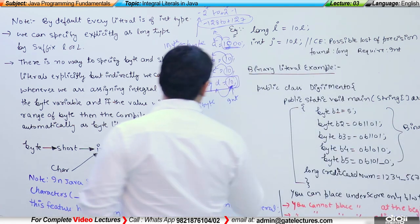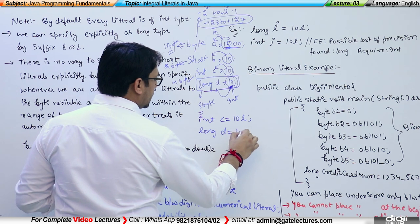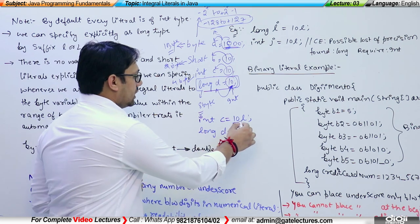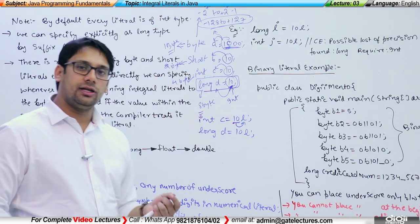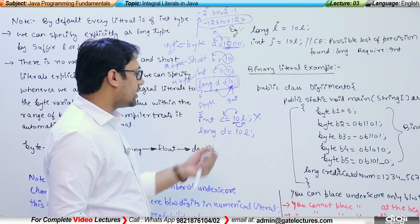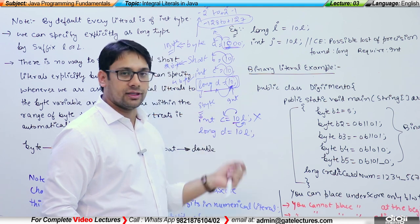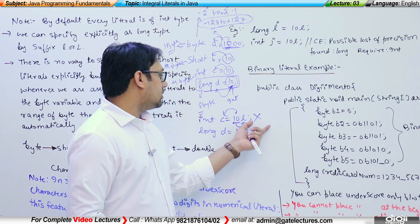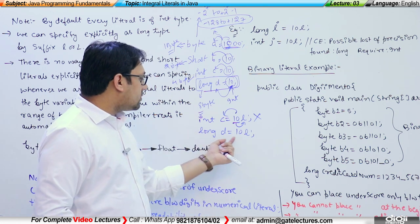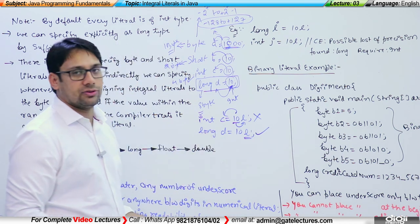But if you try integer c = 10L and long d = 10L — when you suffix an integral number with 'L', you are specifying that this integral number is of type long. So the assignment of 10L to integer c cannot be done because the size of long is much bigger than the size of integer. It will give a compile-time error saying 'possible loss of precision: required integer, but found long'. However, long d = 10L is perfectly correct because 'L' specifies it is a long number, and you can insert it into a long variable.